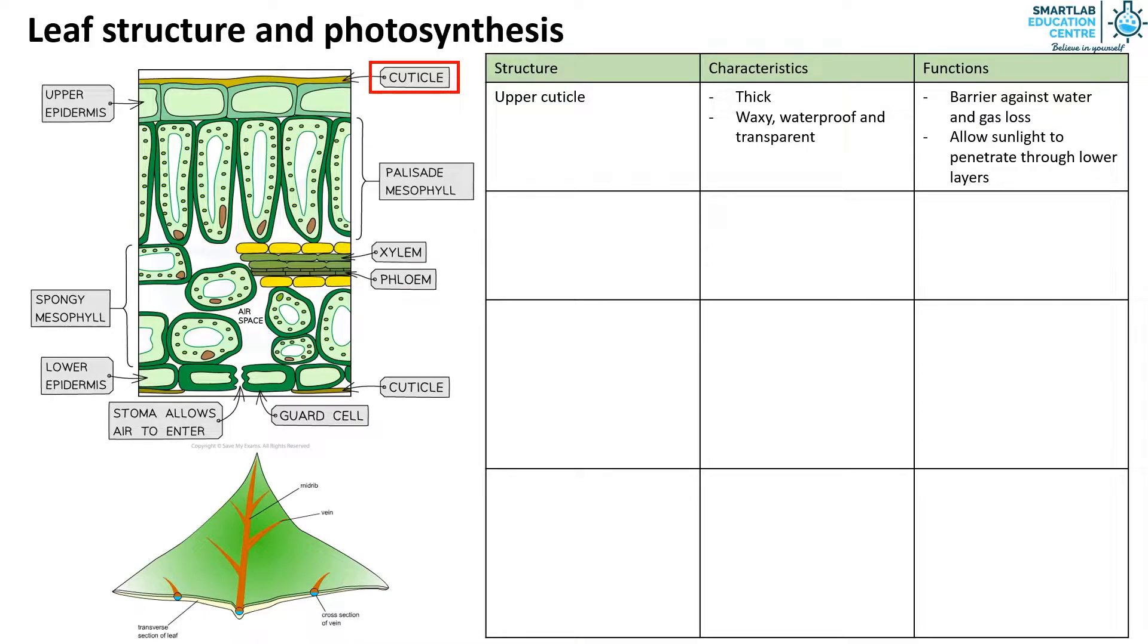The second structure is the upper epidermis. It is thin, made up of single layer of closely packed cells. However, these cells don't contain chloroplasts. These cells protect the inner layer of cells in the leaf and allow light to reach the mesophyll cells.